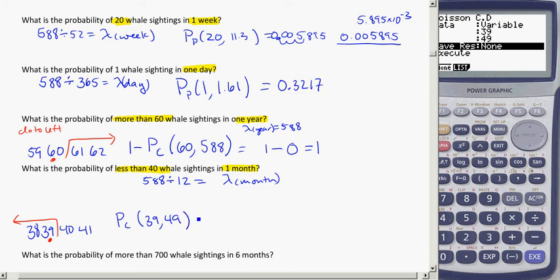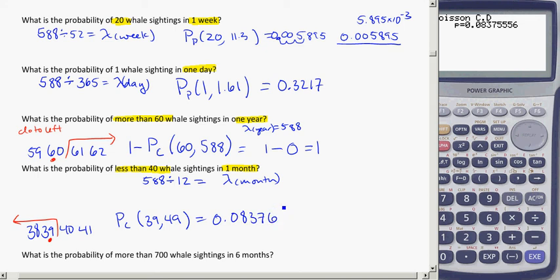And here, we found that we had 0.08376. So, I don't need to do a 1 minus in this case, because the calculator always looks for everything below the line, and that's what I've got. So that's my final answer. Remember, we figured out what it was for a month. My lambda was for a month by dividing the year by 12.